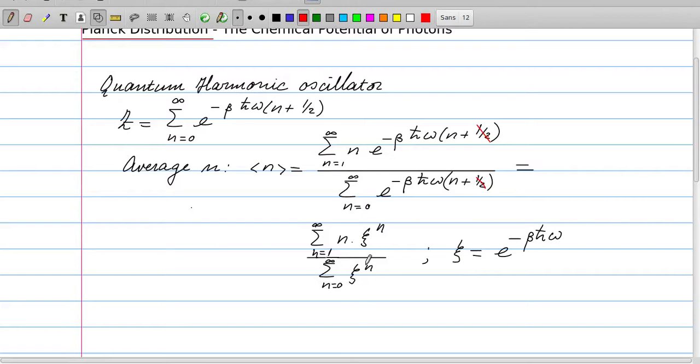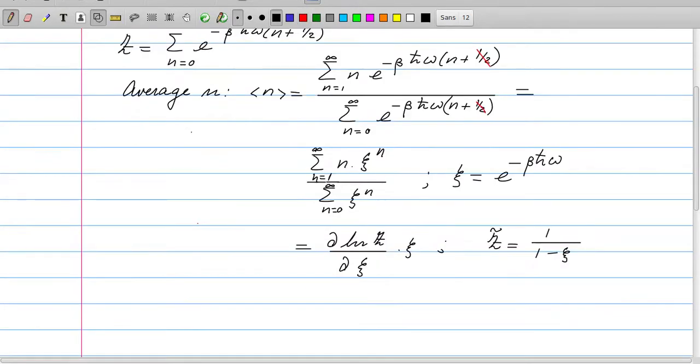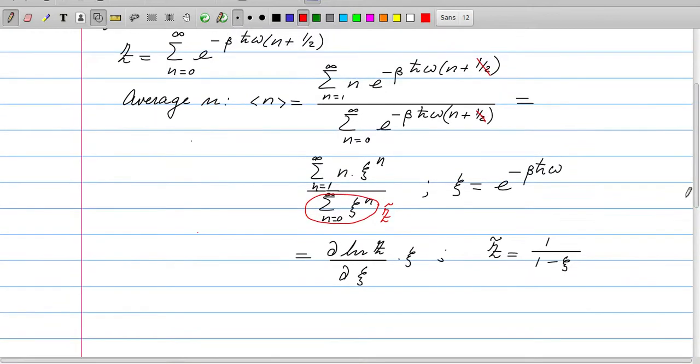The denominator is a geometric series. Let's call the denominator z-wiggle. It's not the same as the partition function of the harmonic oscillator because we miss this factor of one-half. But we can evaluate it. It's just the geometric series, and the result is z-wiggle is one over one minus xi.